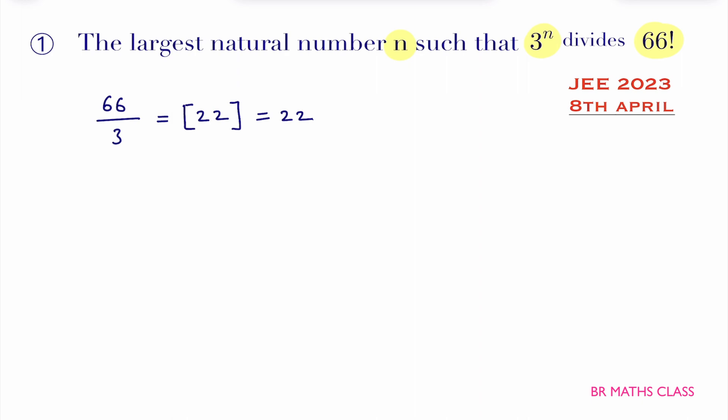Now here you got 22, that 22 you divide with 3 again. 22 divided by 3, 22 divided by 3 is what? It is 7.33 you will get. You take step of that. Step 7.33 is what? It is 7.